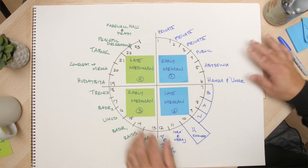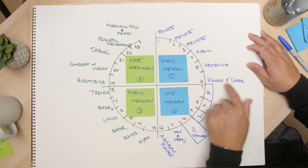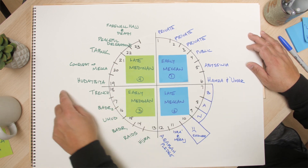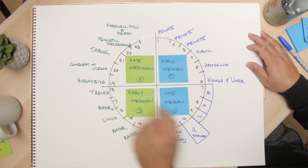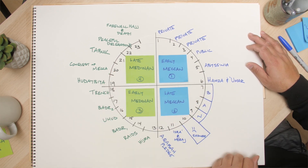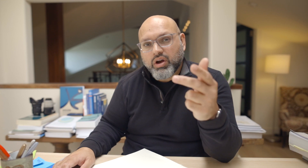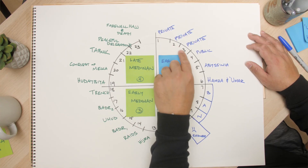Then we further divided using the other two H's — Hamza and Omar right here in Quran year 6, and the Treaty of Hudaybiyah in Quran year 19. Then we cut this into 23 years and went through each one. The first three years — remember: 1, 2, 3, blast off — years 1, 2, and 3 are the private years.